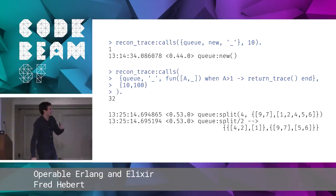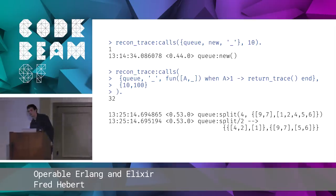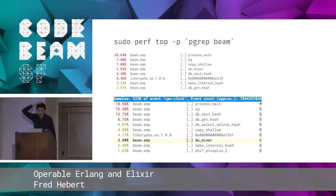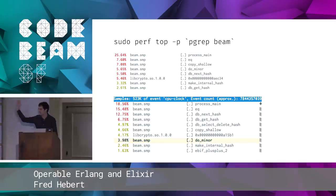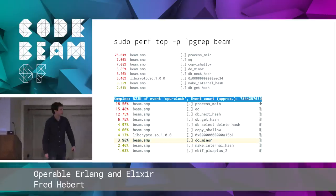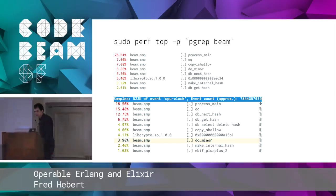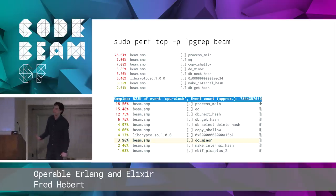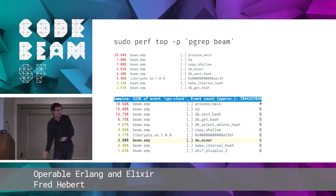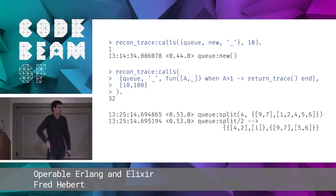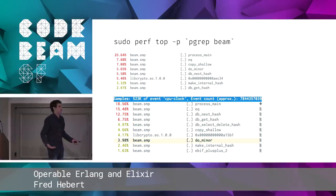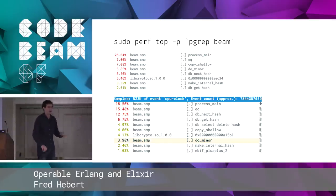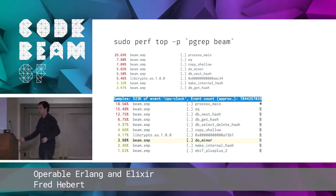Going deeper to the operating system level: perf on Linux, specifically perf top. This is how we debugged problems with the SSL application back at Heroku. It tells you the C functions the VM is running in a top-like interface and where CPU is going. We found a function called do_minor (garbage collection) and db_next_hash / get_hash_select_delete_hash — which turned out to be related to the select_delete ETS operation. I ran a trace on the production node to see who was calling select_delete all the time. It was the SSL manager. Removing that bottleneck made the code five times faster — with about half an hour of investigation, no recompilation needed.